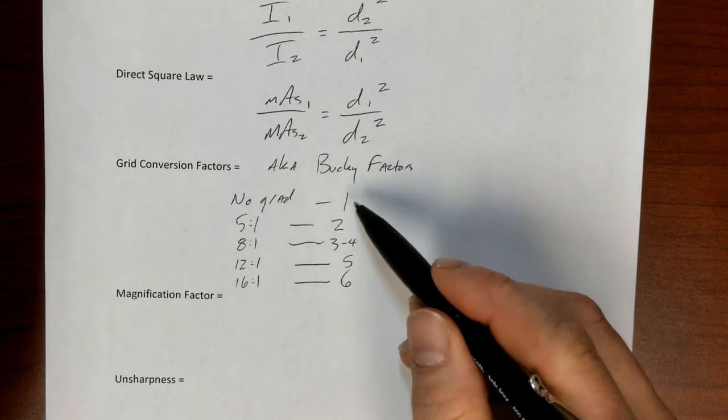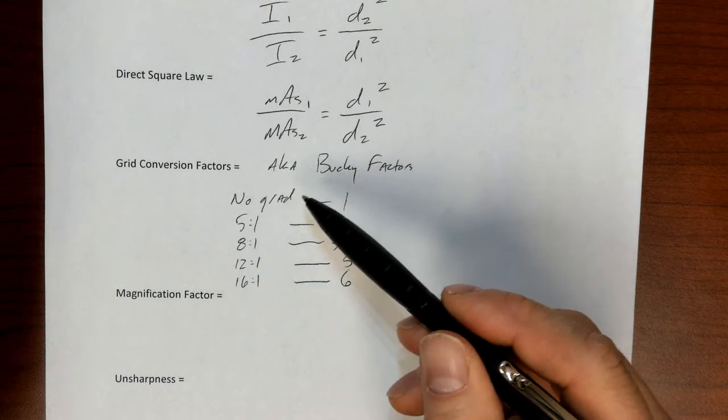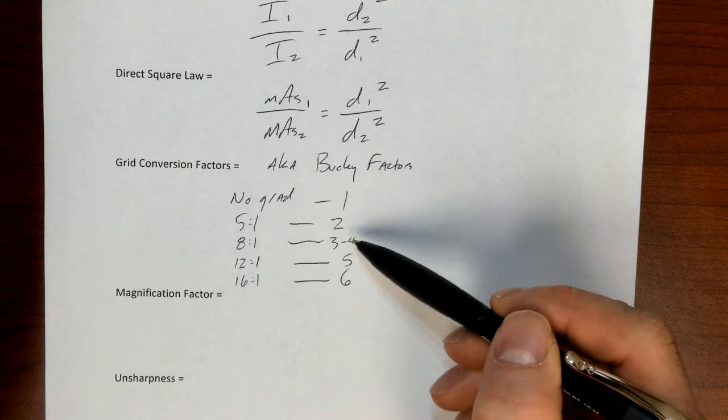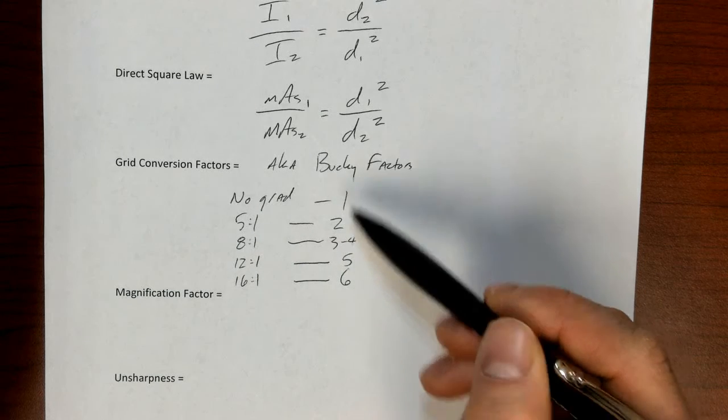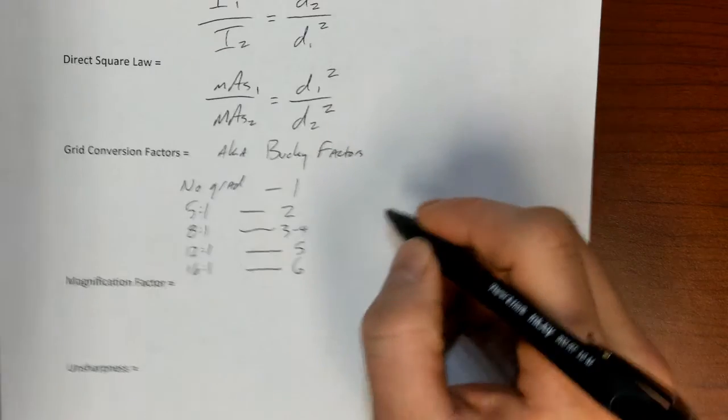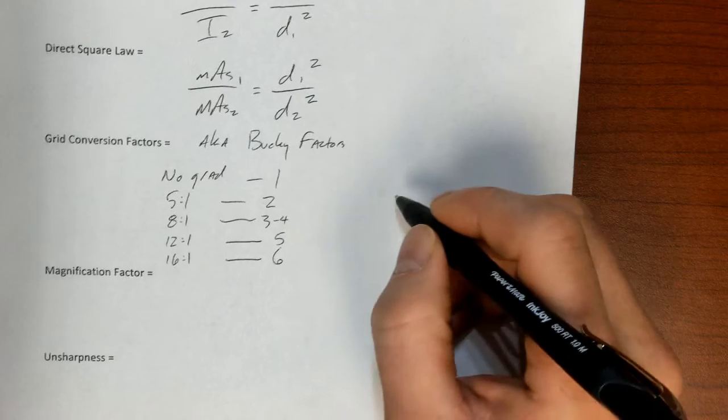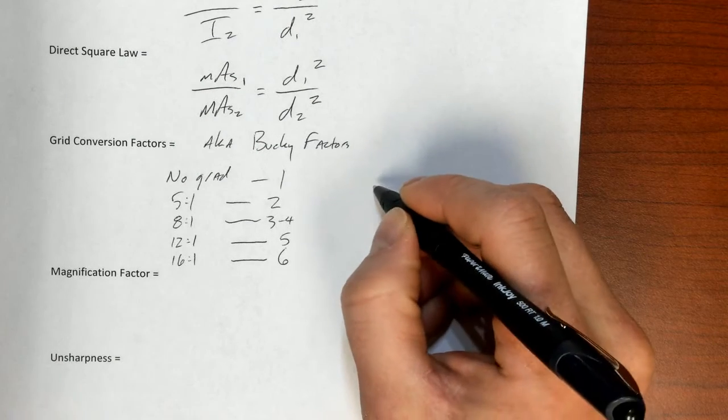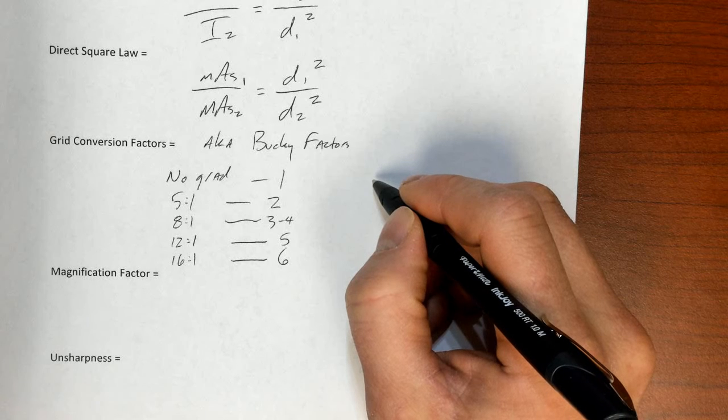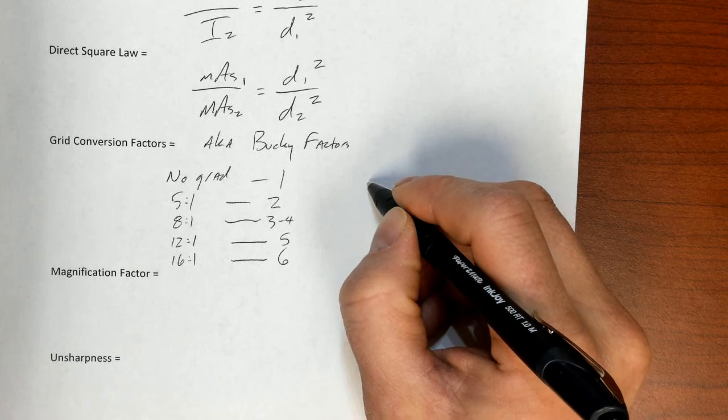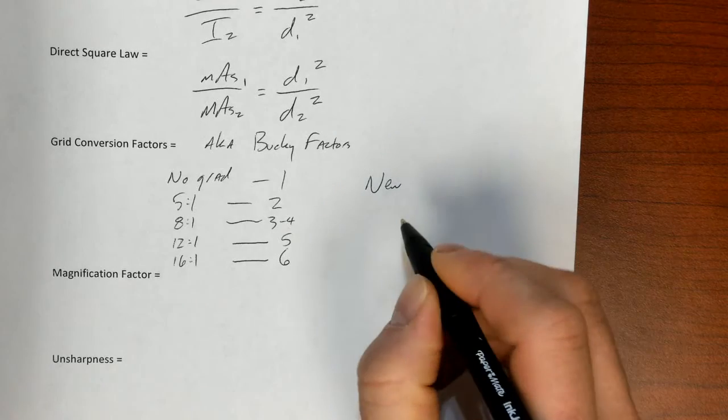So this is a huge thing. The way that I memorize this little table here is that 1, 2, 3, 4, 5, 6. So I just plug and play with these numbers here. And the way that this generally can be thought of if we're changing technique as we're using, say, for example, we did an exam without a grid. And it didn't look very good in terms of contrast. We need to use a grid. Here's the way we would calculate given that.